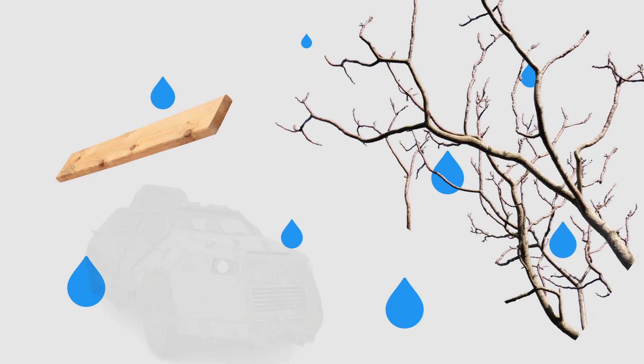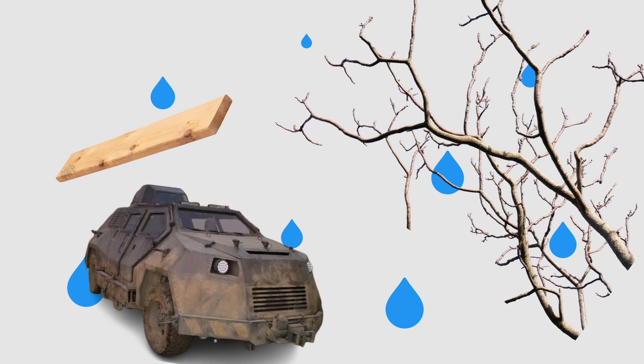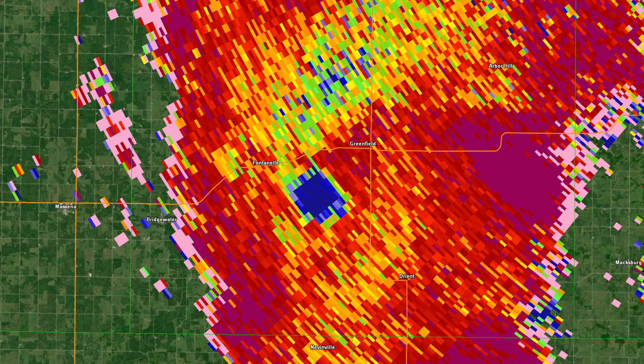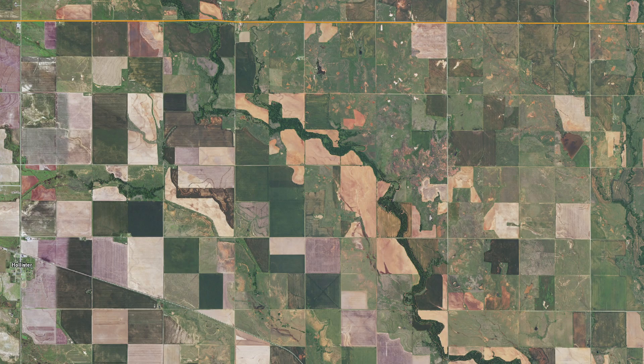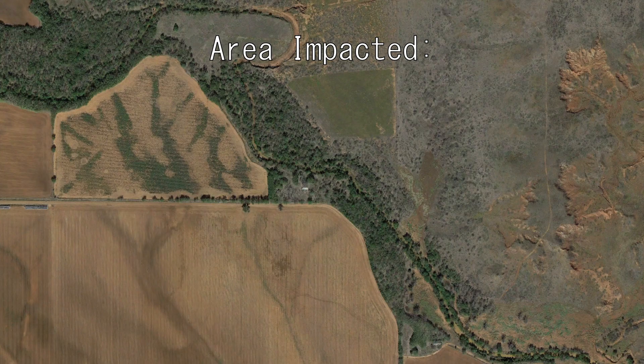If a tornado is strong enough, it might loft large objects high enough to intersect the radar beam. This causes a much higher variation in the sizes of objects in the storm, resulting in a very noticeable CC drop consisting of blues and blacks. These drops don't always happen in areas with a lot of structures. Take a look at this screenshot from a tornado in Oklahoma earlier this year — despite a defined CC drop, satellite imagery shows mainly open fields. The tornado still caused a defined CC drop because it lofted numerous trees.